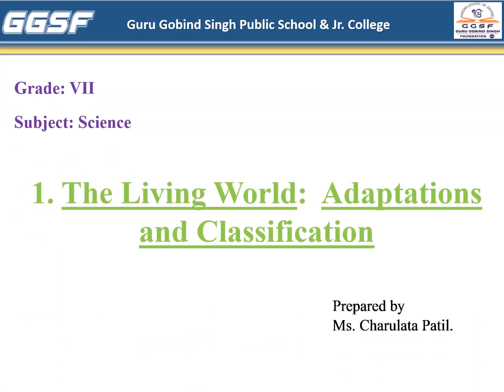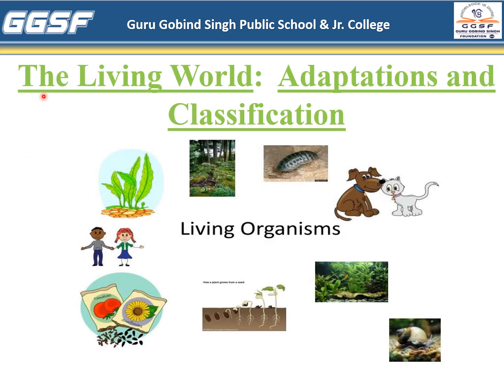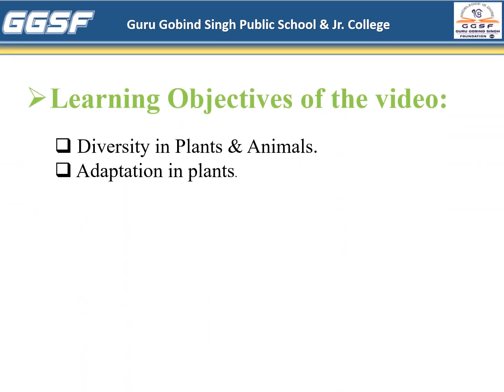Hello Learners. Today in this video we are going to learn 7th Standard Science Chapter No. 1, The Living World: Adaptations and Classification. The Living World comprises of different kinds of plants and animals. In this video we are going to learn about the diversity in plants and animals and adaptation in plants.